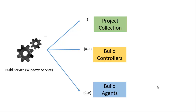We can have multiple agents on the same machine. This depends on the number of processors that we have, because the Build Agent is doing the intensive work. So depending on the processor, the configuration will show you the number of agents that you can install.